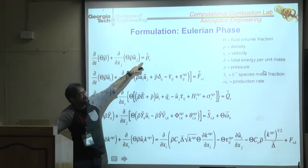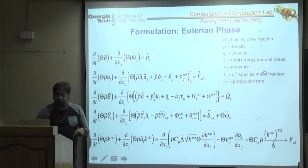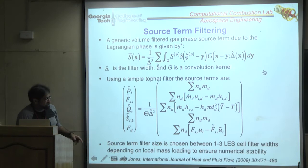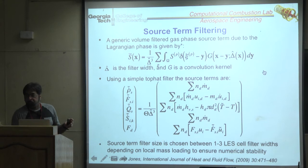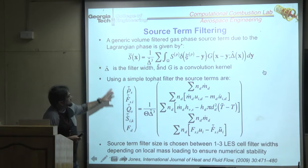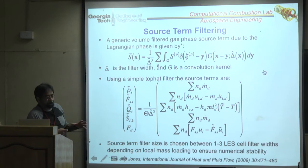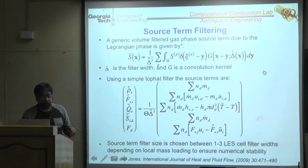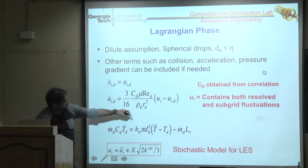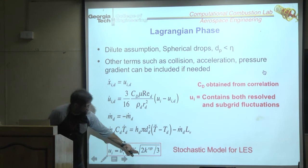Solution: filter the source term over a filter size (we use about 3 grid points) to distribute it spatially rather than having it all appear in one cell. This generally works for dilute problems. The drag law uses the resolved velocity plus a stochastic random-walk model so that particles respond to both mean velocity and turbulent fluctuations.